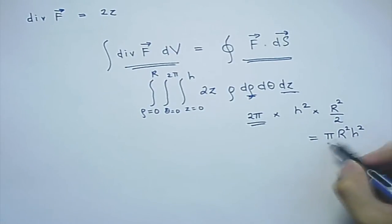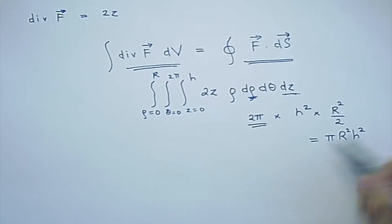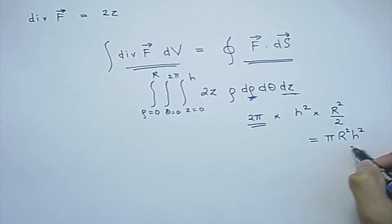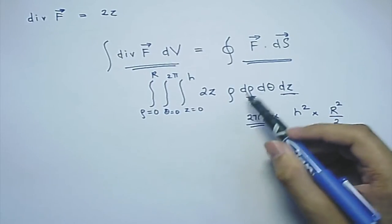A student says they are not getting the answer pi r squared h squared for question 2. The instructor confirms the calculation has been shown and appears correct. The student is advised to check with colleagues, and if there is still a discrepancy, to post their solution on Moodle for further discussion.